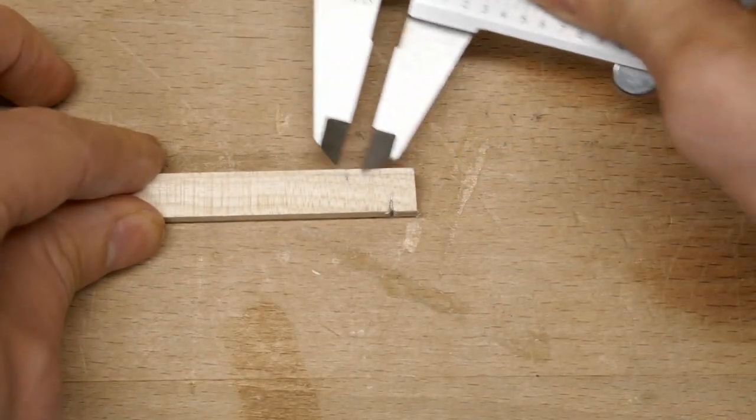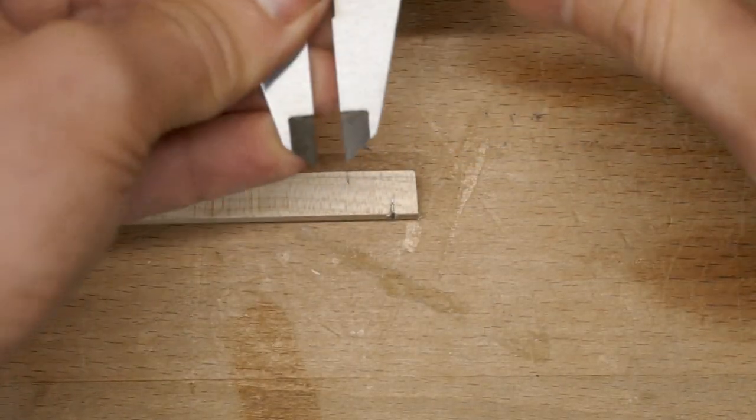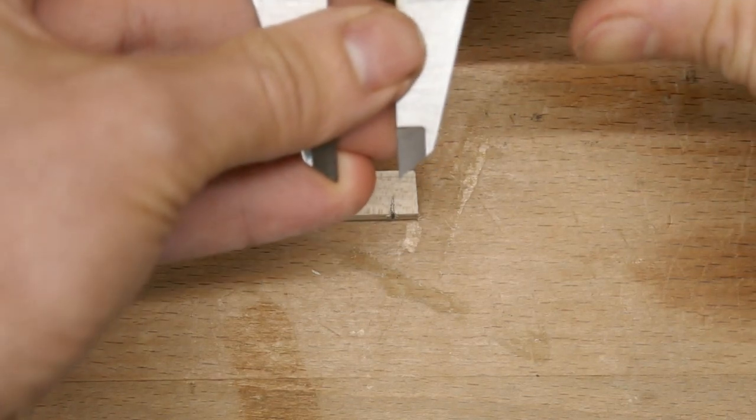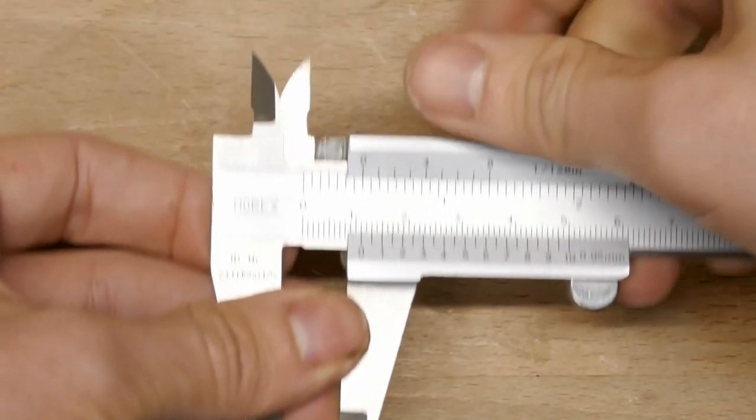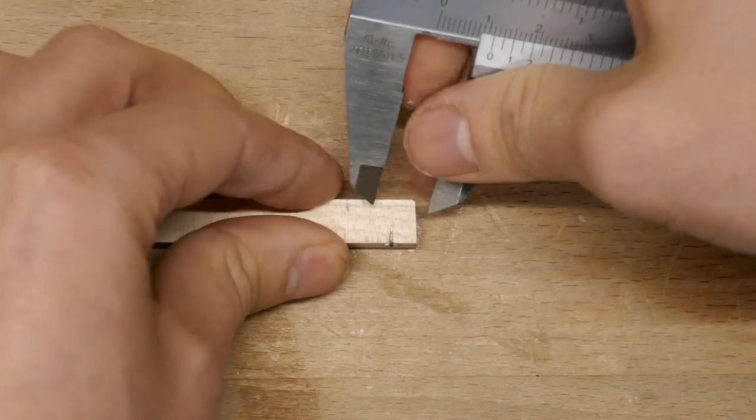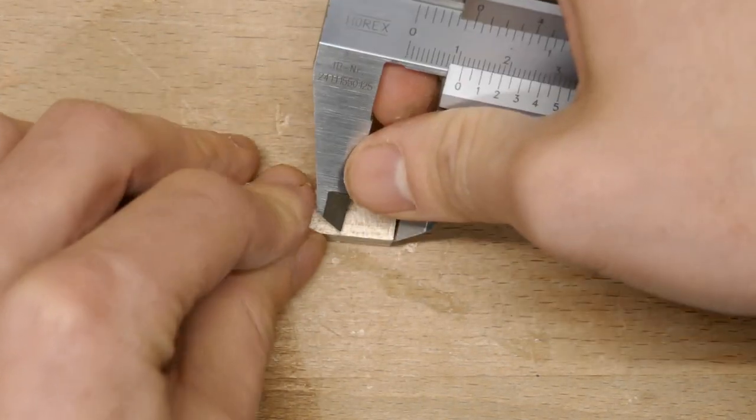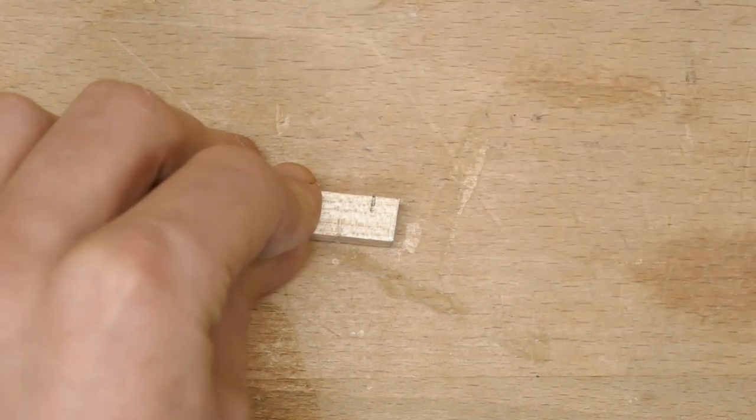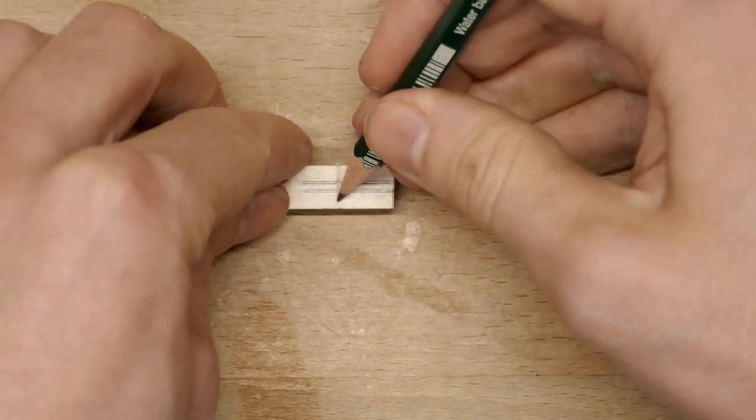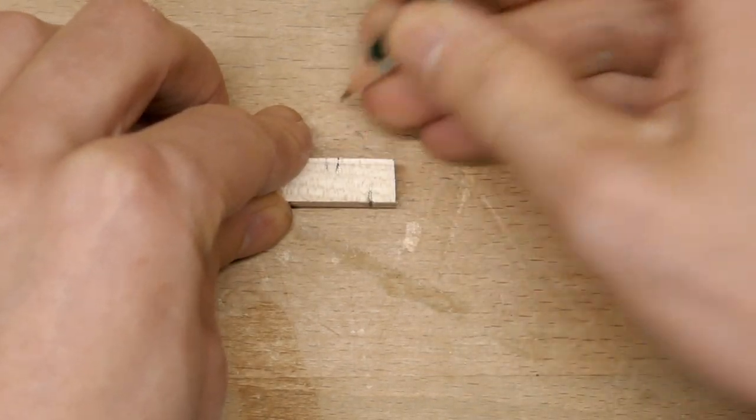Now I want the shoulder to be about 6mm forward from the heel. So that gives us 11mm from the back. So we set the calipers to 11, mark out here, mark along the top this time, because the shoulder's a feature on the top, and on the other side. And again, fill in the marks with some pencil.